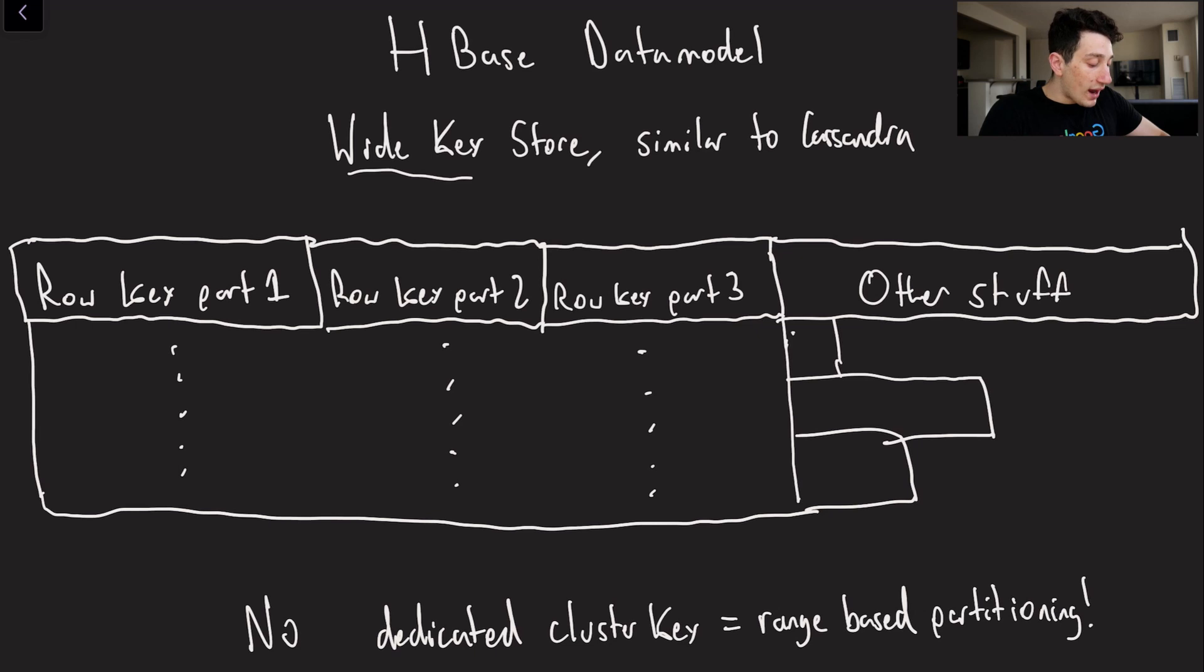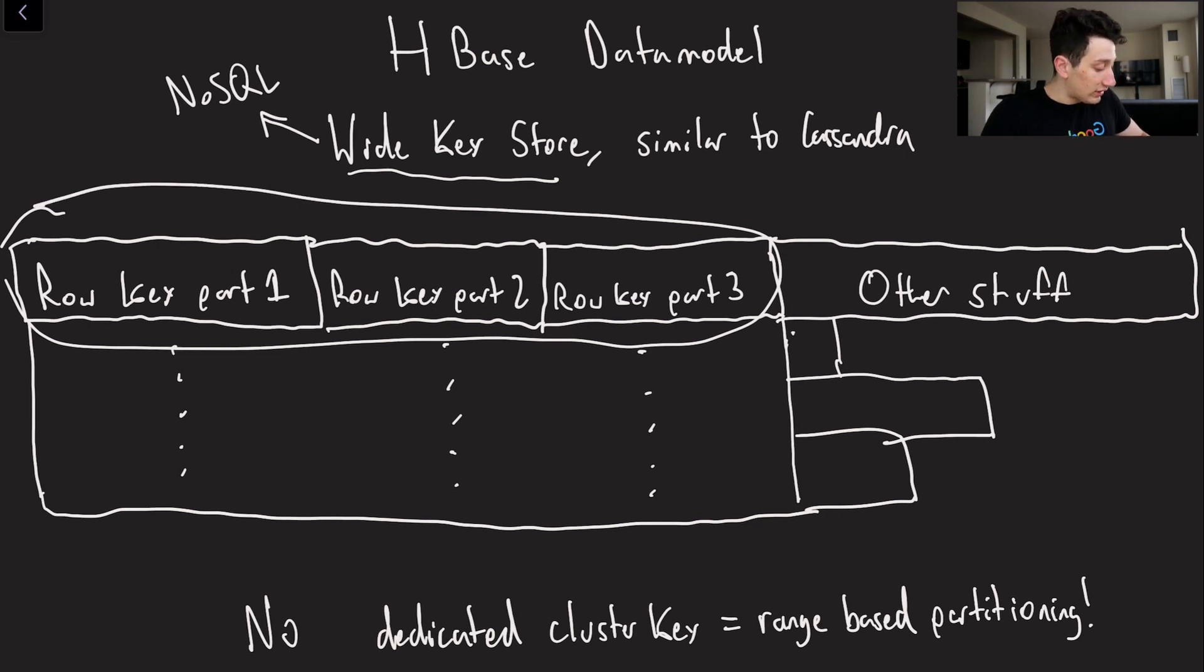So again it's going to be a wide column store, which if you can think about it means that we are in fact using a NoSQL database here. And again that is similar to Cassandra in the sense that every row has to have a certain part of information, and then you've got all this other stuff that is pretty much just optional. You can either have it or you don't have to have it, but we do need certain parts of the row that comprise something known as our row key.